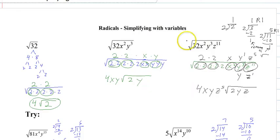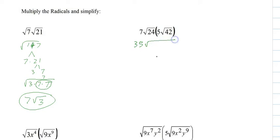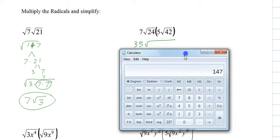So 7 times 5 is 35, and then 24 times 42 is 1008.